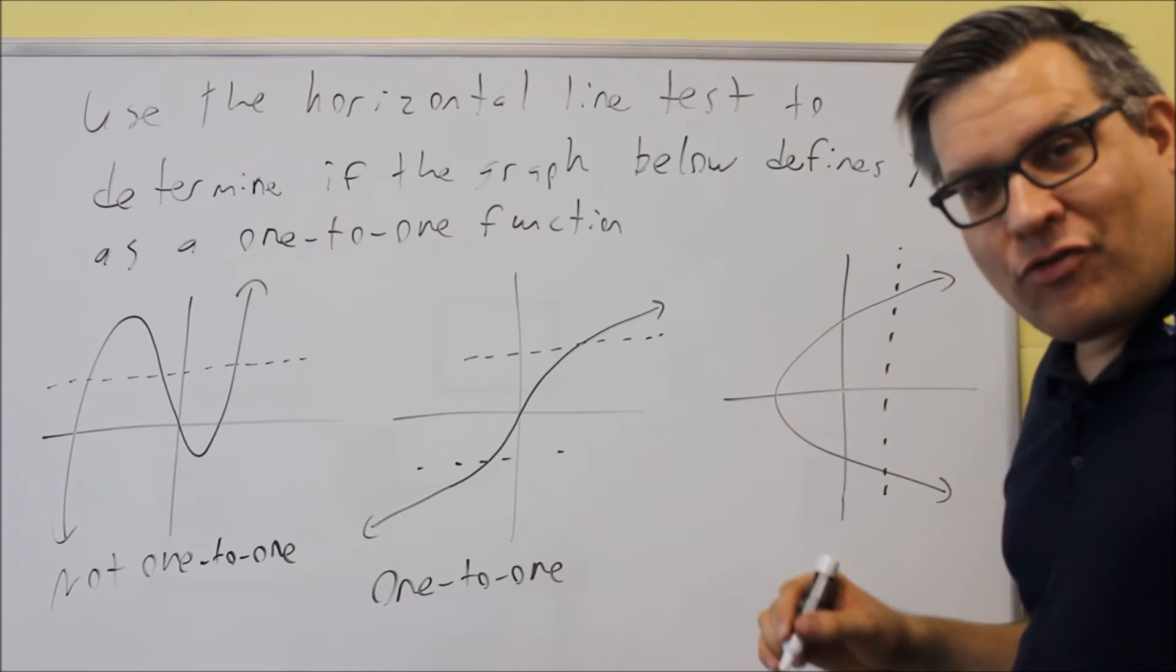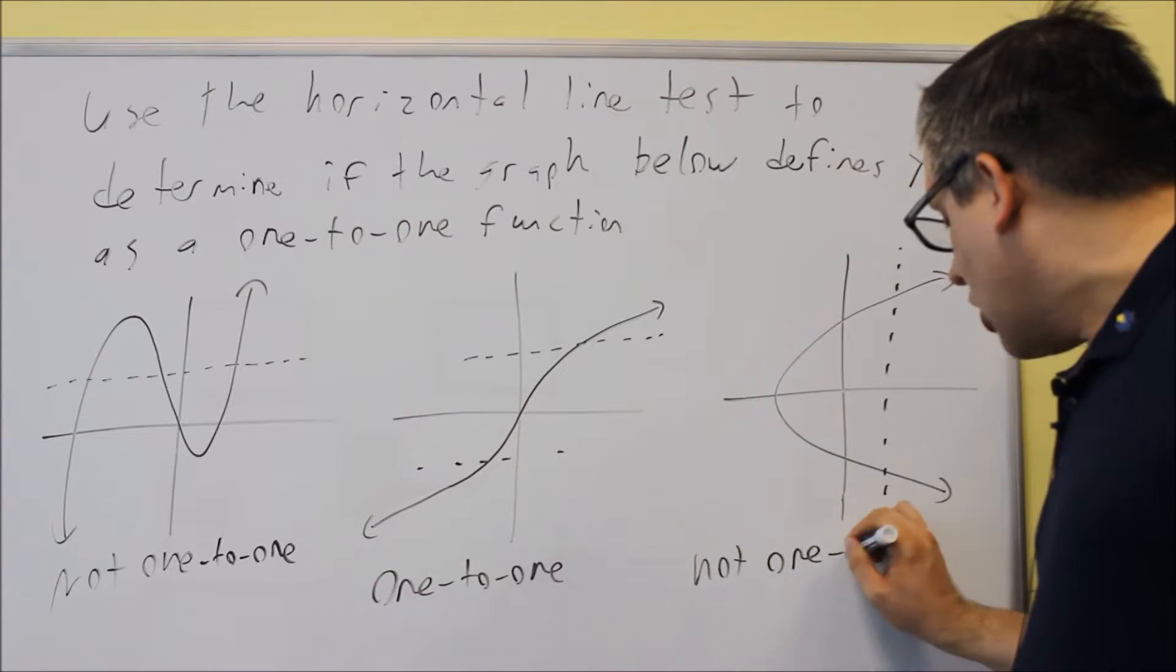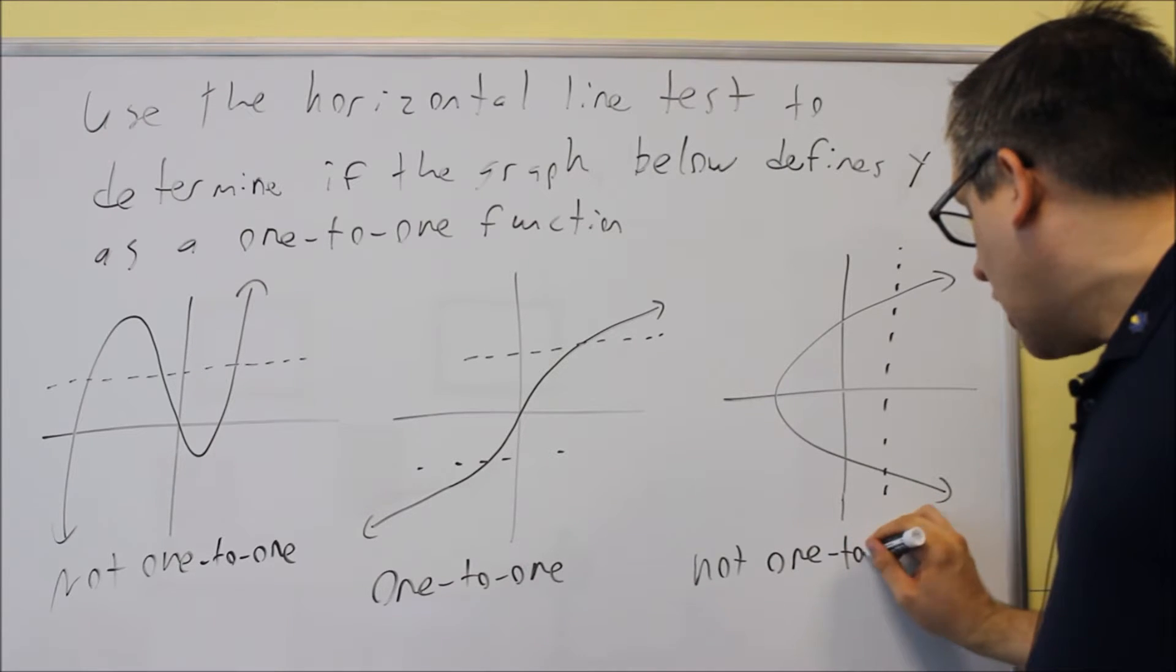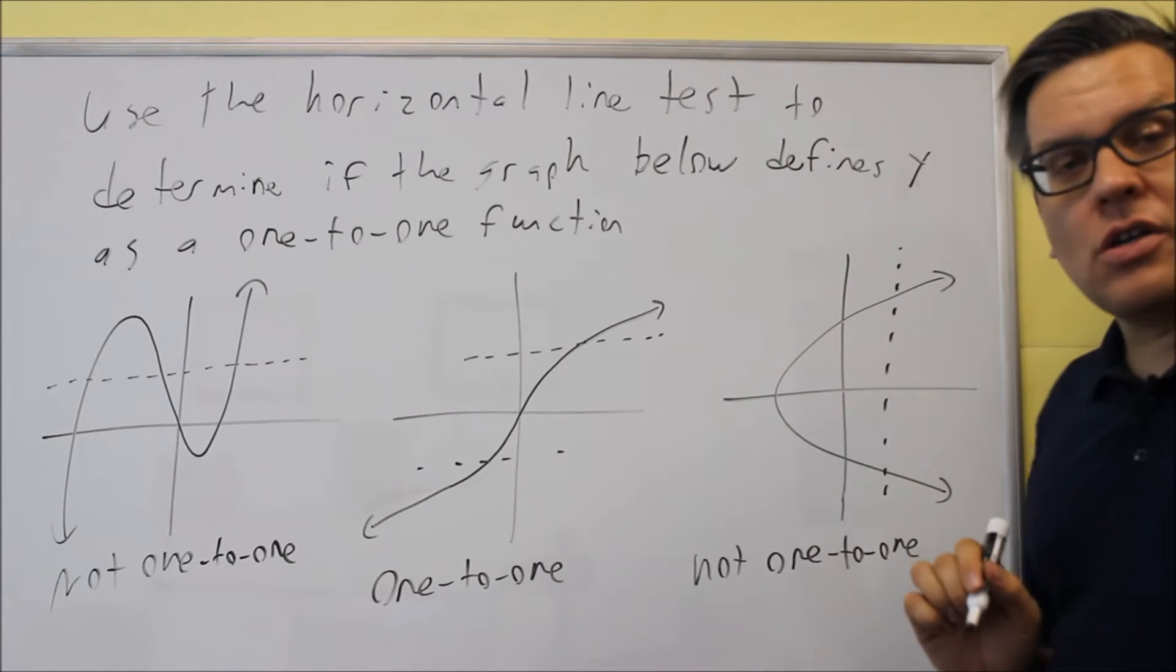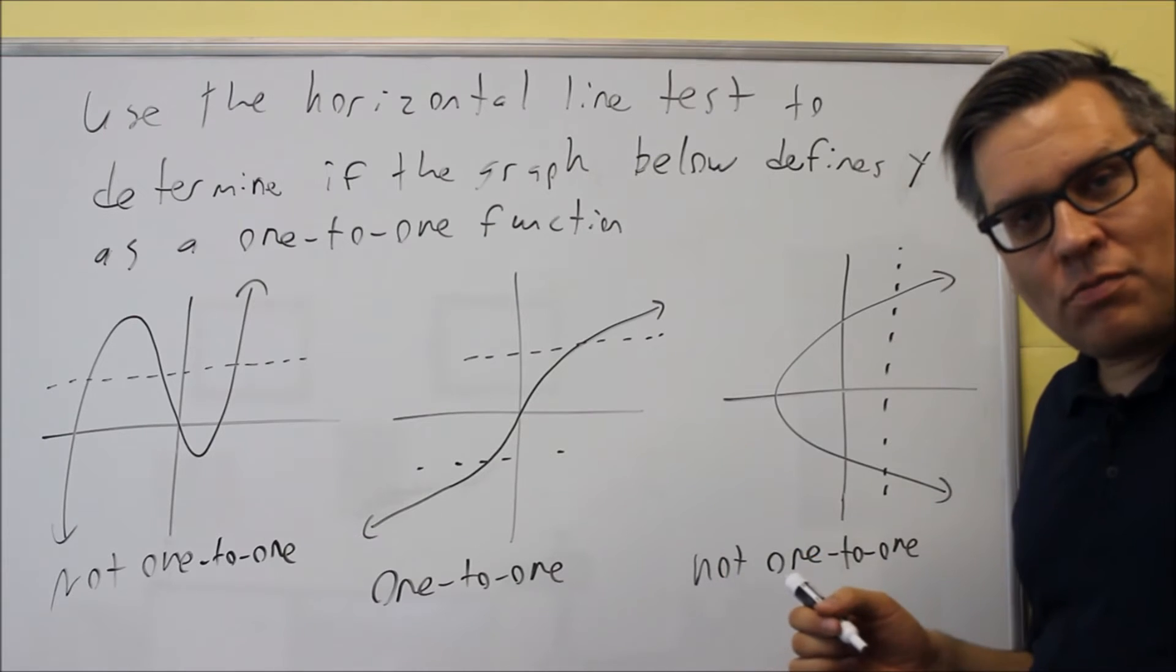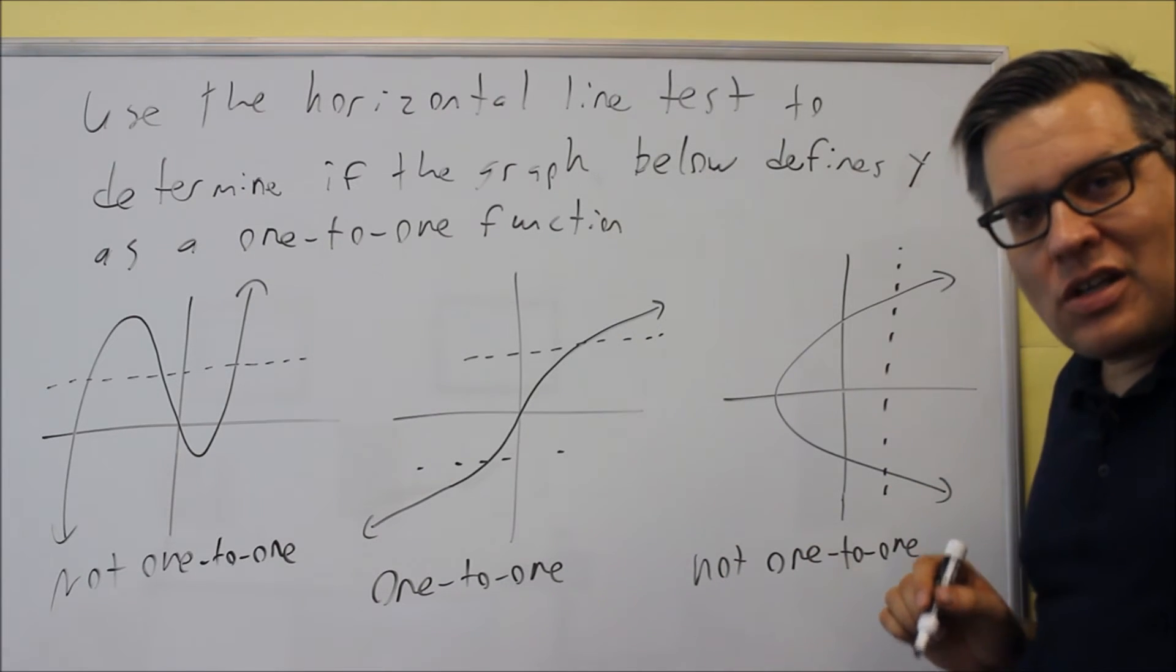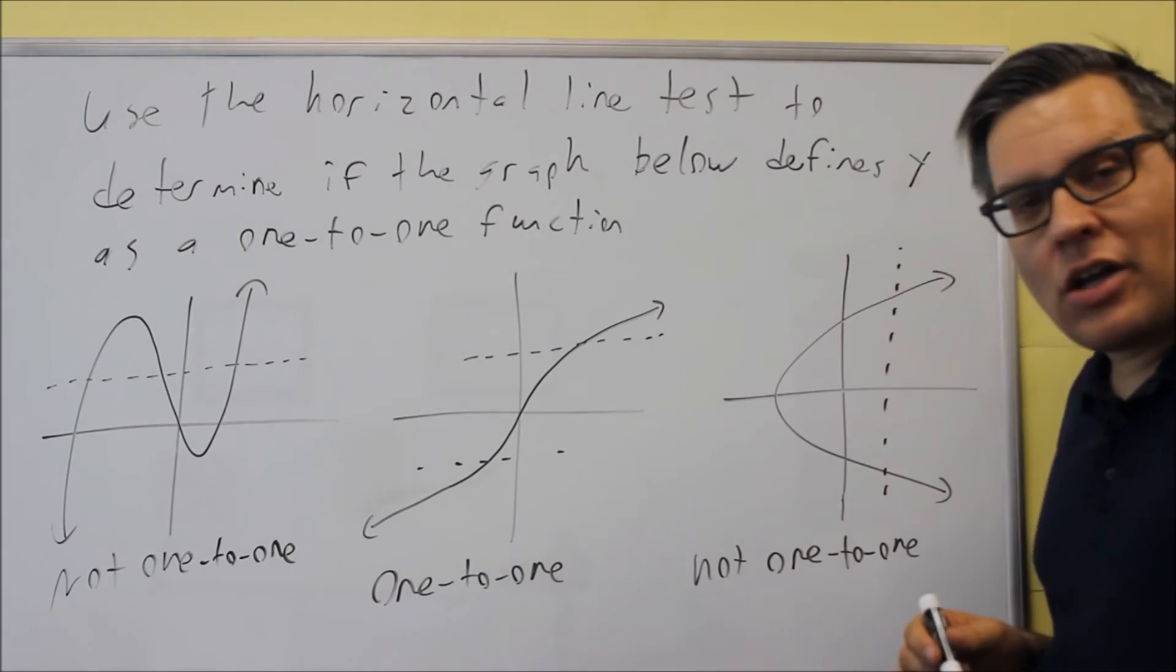So it's not a function, therefore it's automatically not one-to-one. So you have to make sure you watch that. Every time you do these, you have to make sure first it's a function. So if it doesn't pass the vertical line test, it's not a function and therefore it cannot be one-to-one.